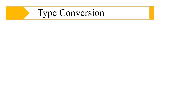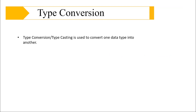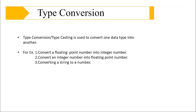Type conversion is nothing but type casting — converting one data type into another. For example, we can convert a floating point number to integer, an integer number to floating point number, or a string to a number (either floating point or integer). We will be applying this type conversion to most of the data types.